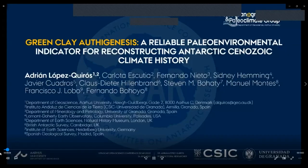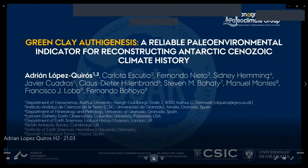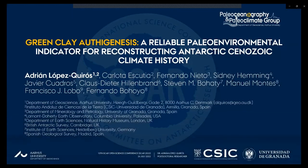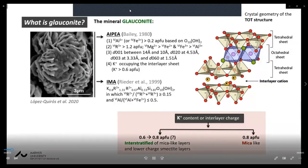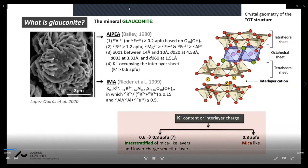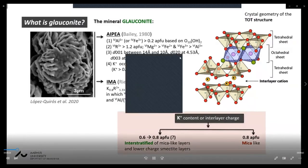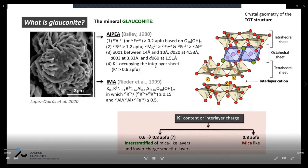Good afternoon, I'm Adrian Lopez-Quiroz and I will present on green clay autigenesis — a relevant environmental indicator for reconstructing Antarctic Cenozoic climate history. First, I would like to highlight what the mineral glauconite is. Glauconite sensu strictu is a dioctahedral, potassium- and iron-rich, interlayer-deficient mica, as described by the International Association for the Study of Clays and the International Mineralogical Association.